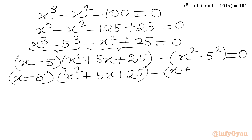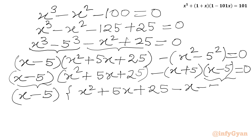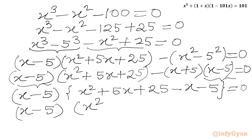We will apply the difference of two squares formula to get x plus 5 times x minus 5. So we have x minus 5 times x square plus 5x plus 25, minus x plus 5 times x minus 5. In the other bracket we will get x square plus 4x plus 20, since 5x minus x is 4x and 25 minus 5 is 20. Equal to 0.